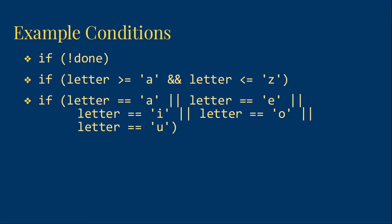The last one here, if letter equals A, OR letter equals E, OR letter equals I, OR letter equals O, OR letter equals U. Basically, if letter is a lowercase vowel. Note that we can string these together. Though when we start combining conditions, we need to remember that precedence is a thing.